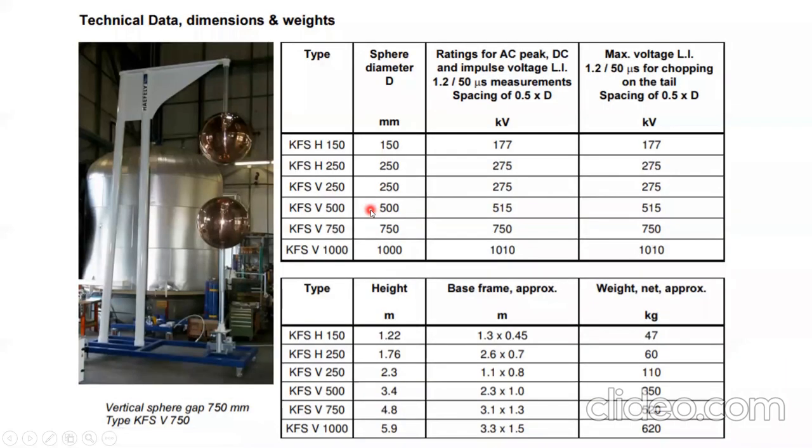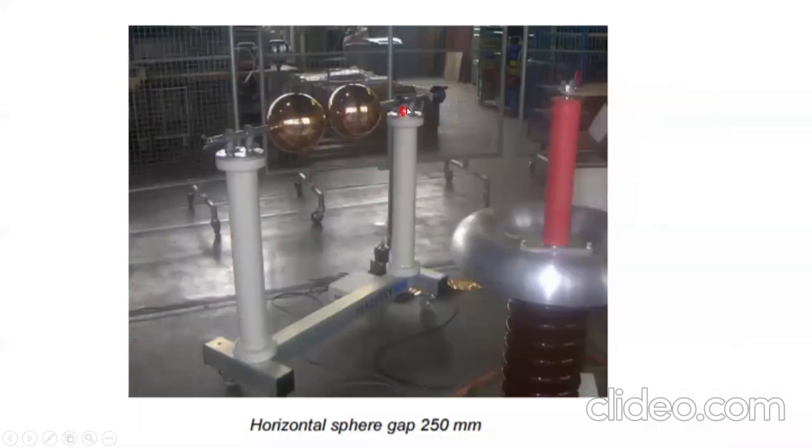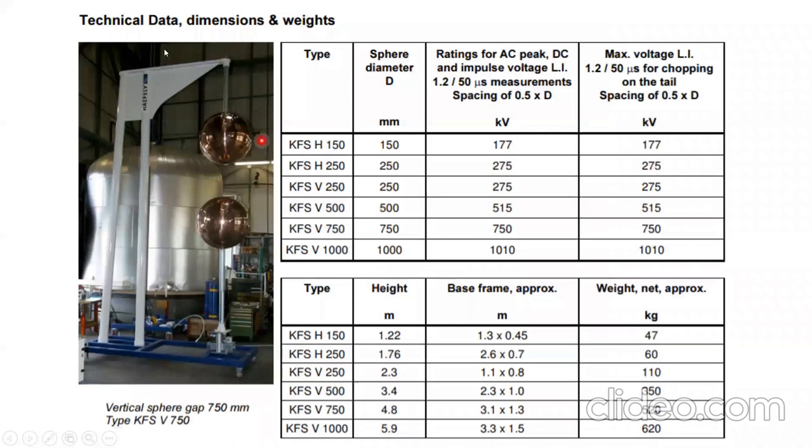You can notice here there's an upper sphere and a sphere at the bottom. Somewhere here there's some kind of support and some mechanism with a motor so that the distance of this sphere gap vertically can be adjusted. Even another picture, this is a horizontal arrangement.